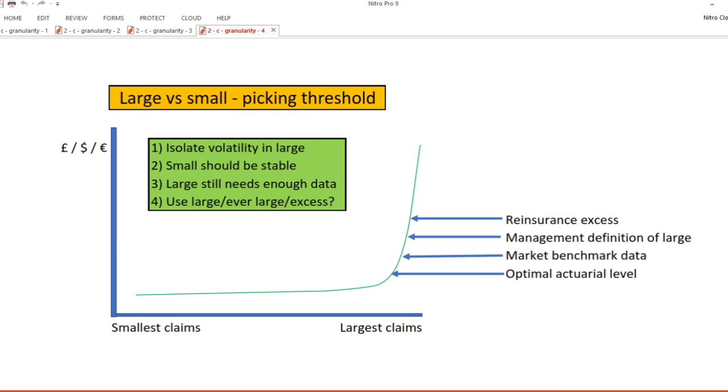Let's talk about splitting large and small claims now. As I mentioned, this is a very common actuarial approach with good reason, as there are so many differences throughout the policy lifecycle between large and small claims. There are three key technical principles to guide you when splitting a class into large and small, and one nuance to consider also. The key decision here is what threshold to use between large and small.